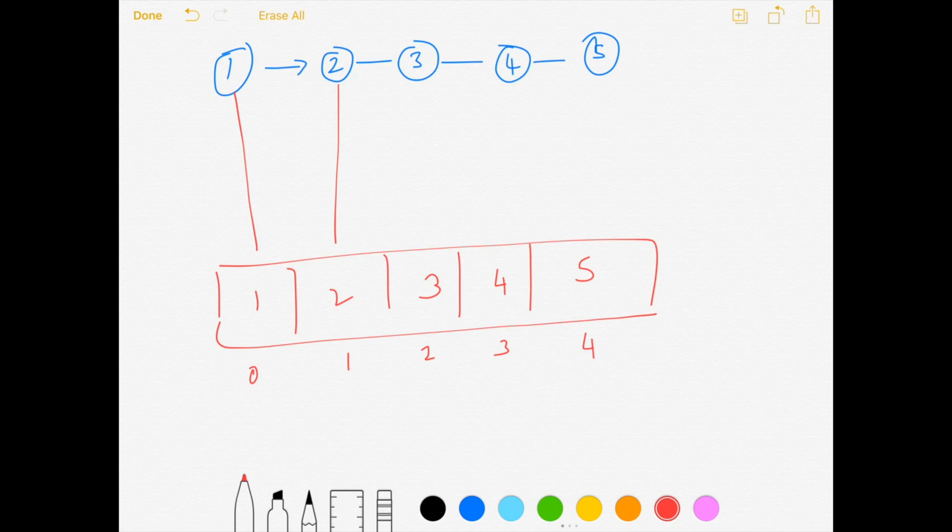Once I have iterated through all the elements in the list node, all I need to do is iterate through the collection that we have built in the reverse order and build a new list node with the values that we have saved.